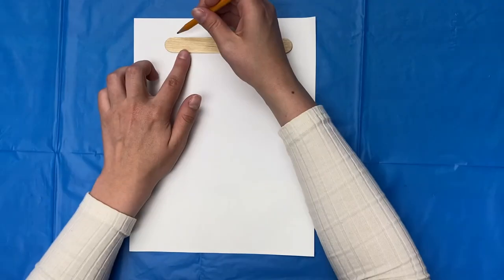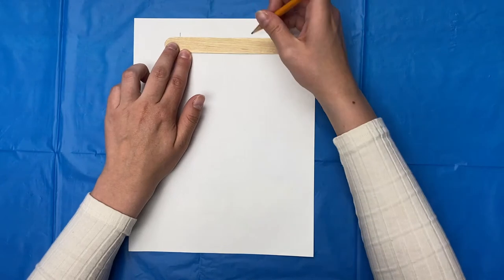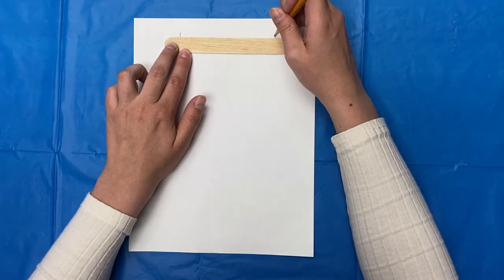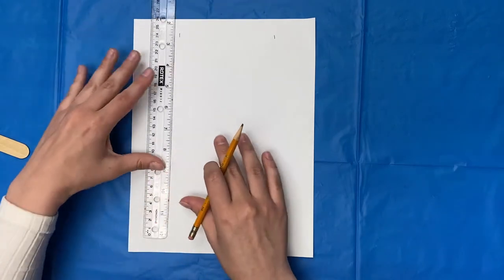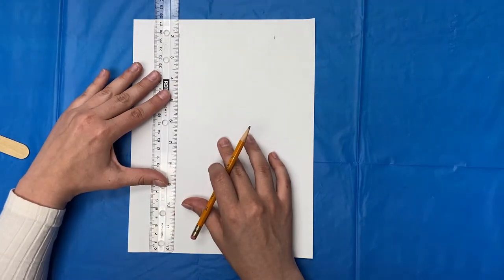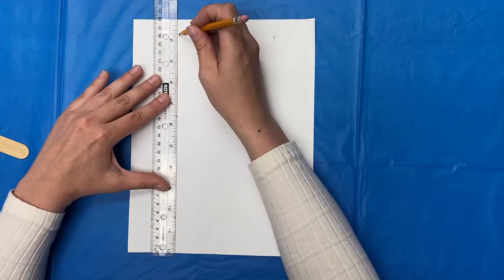Make two marks on your paper slightly smaller than the popsicle stick. I drew a line to help make sure I cut straight.